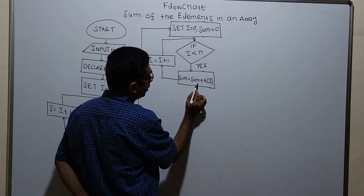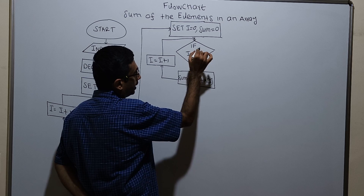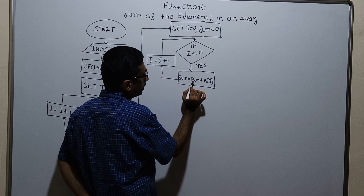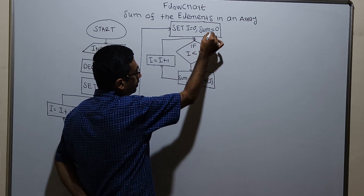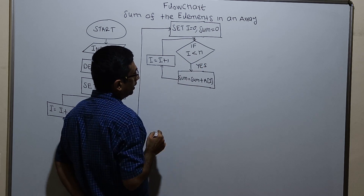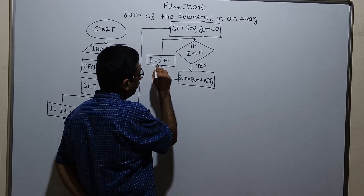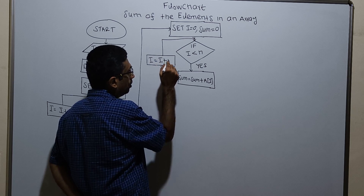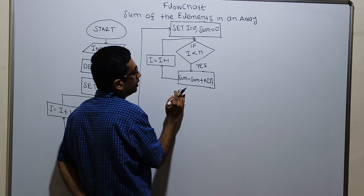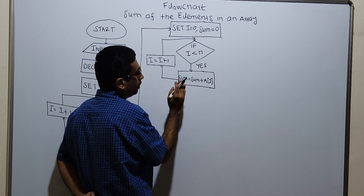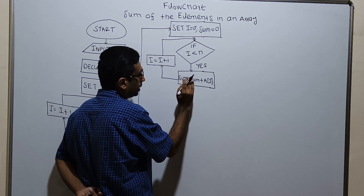If i less than n, sum equal to sum plus a of i. i will get incremented by 1. Again i less than n will be checked. sum equal to sum plus a of i. For example, if i value is 0, sum equal to 0. i less than n is true, sum equal to sum plus a of 0. i will get incremented by 1. i is 1 now. 1 less than n, if it is true, then sum equal to the existing value of sum.